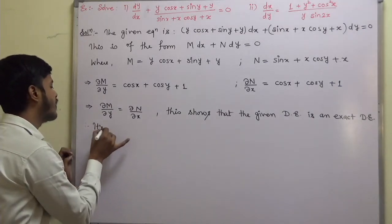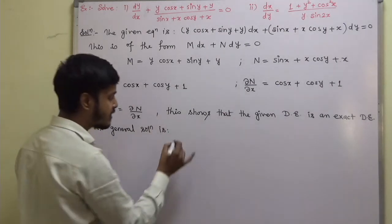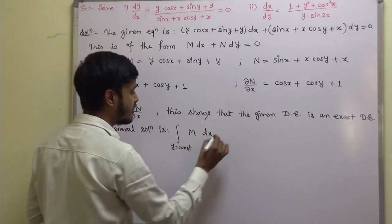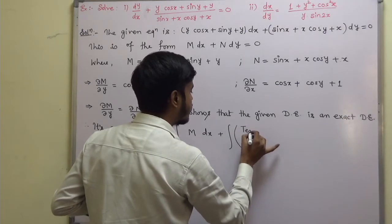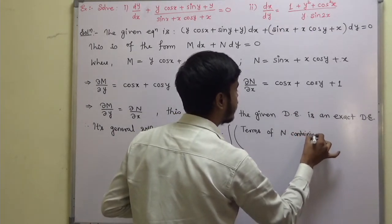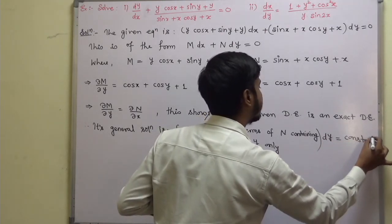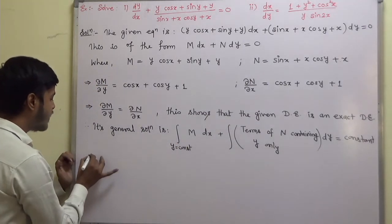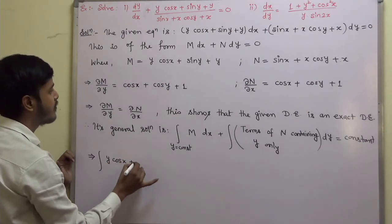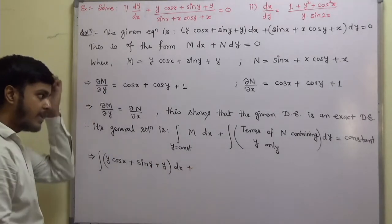Therefore, its general solution is: integration of M dx keeping y constant, plus integration of terms of N containing y only dy, is equal to constant c. We already covered this in earlier examples, so you must remember this formula.